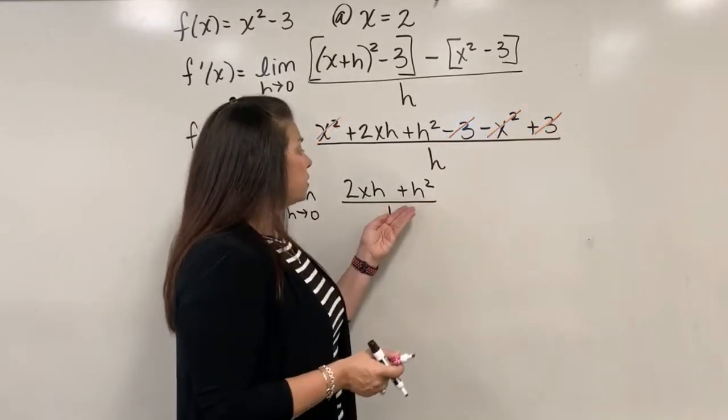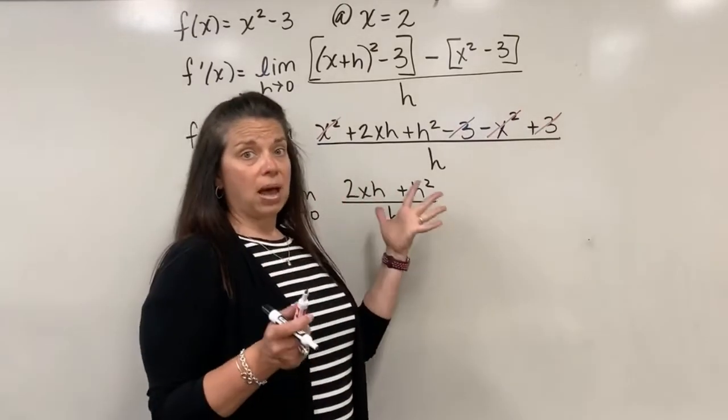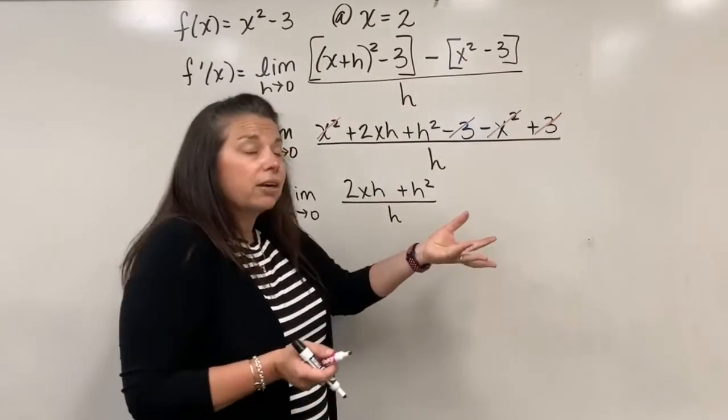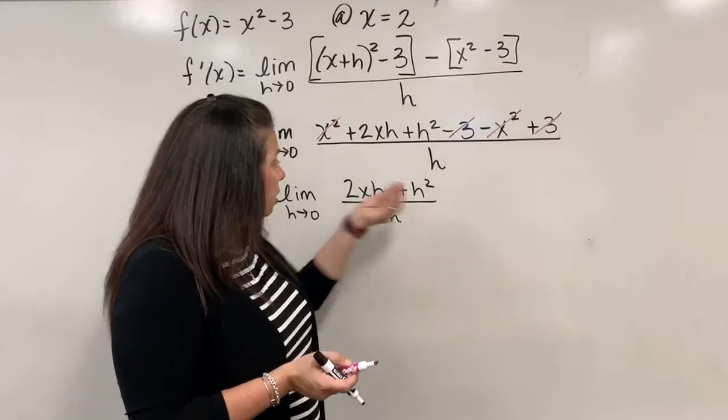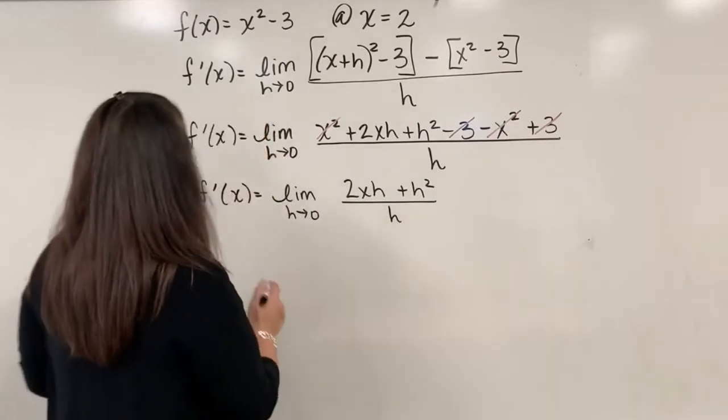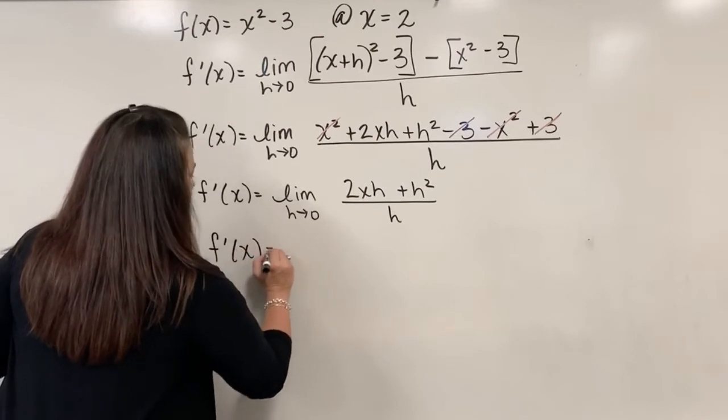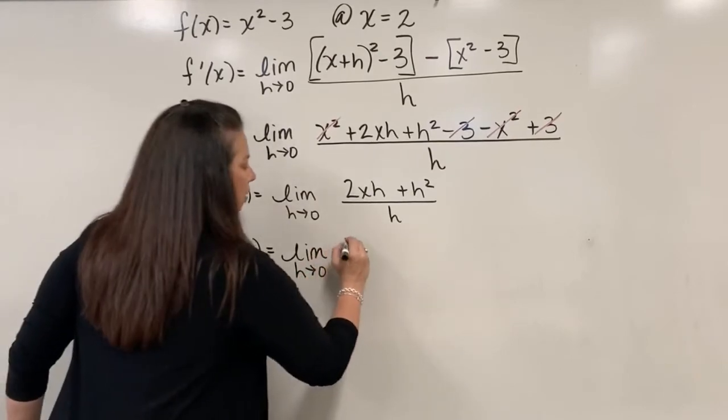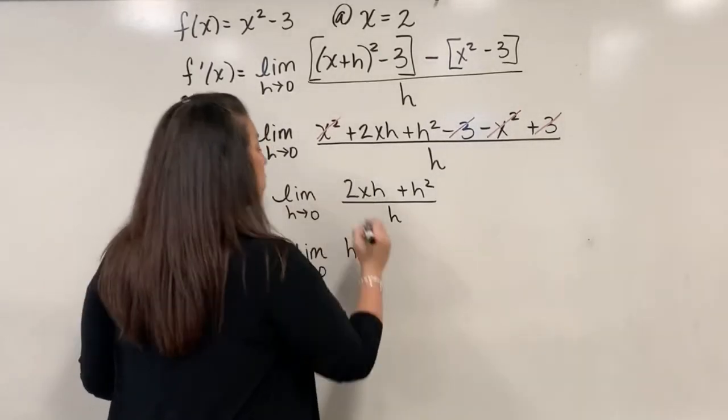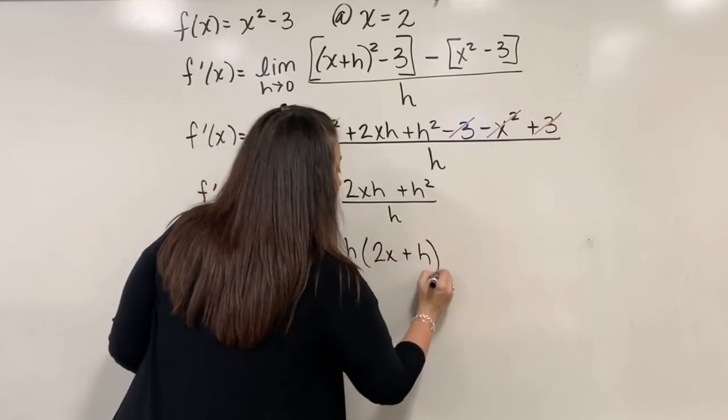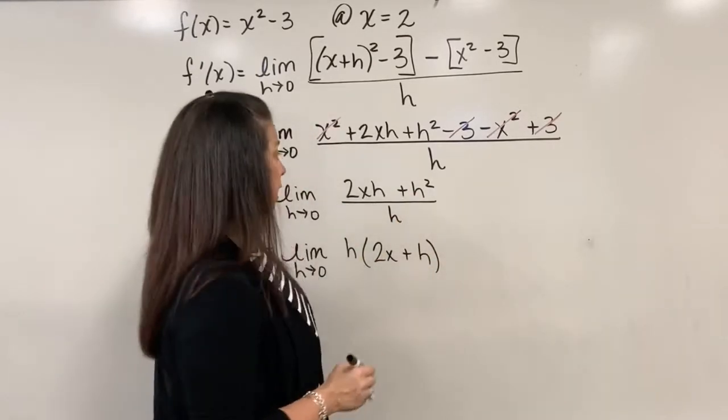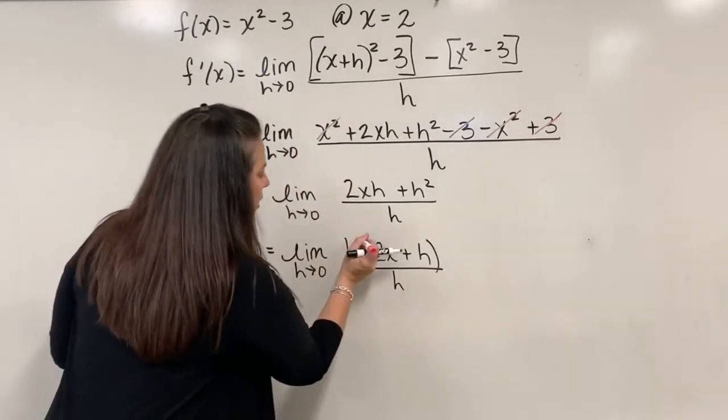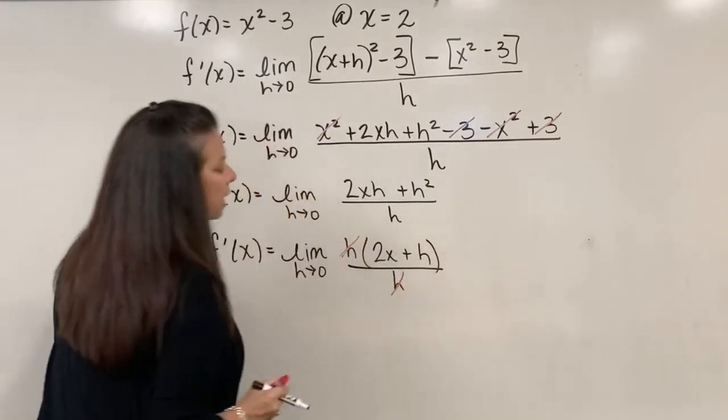And again, just like we've seen previously, I have to be clever about how I go about removing the h in the denominator. And I notice in my numerator, I've got a couple of terms that both have an h. Let's go ahead and factor out the h in my numerator so that hopefully it divides out with the 1 in the denominator. So I have f prime of x equals the limit as h approaches 0 of h when it gets factored out. What's left now is a 2x plus an h from leftover from the h squared. And then all of that still divided by h. And now this h in my numerator divides out with the h in the denominator.